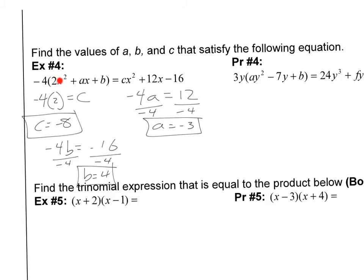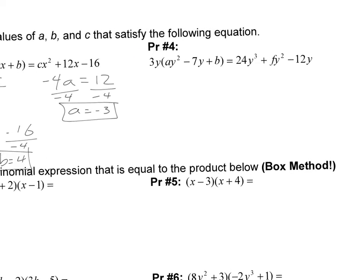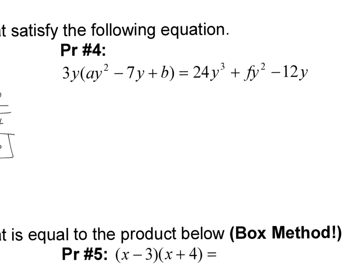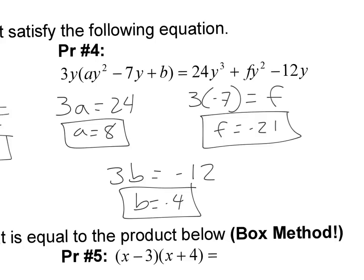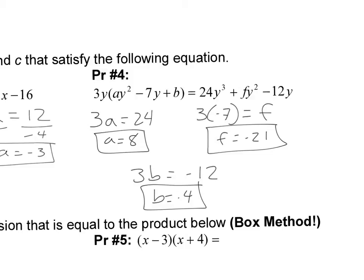Remember, what I'm looking for is the parts that match up. See how that's an X squared? That's an X squared. That's just an X. That has no X. That's how I know what parts match up. Go ahead and give practice number 4 a try — pause the video and come back when you're ready. Hopefully you got A equals 8, F equals negative 21, and B equals negative 4.